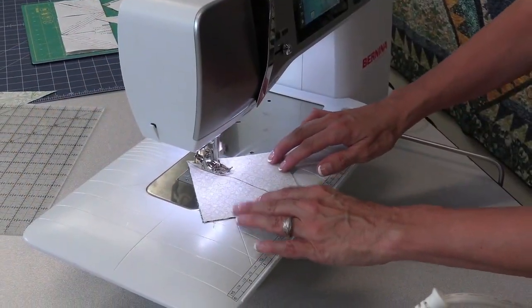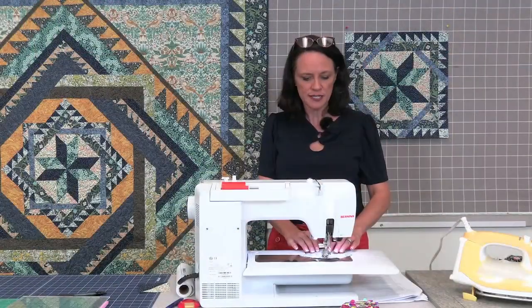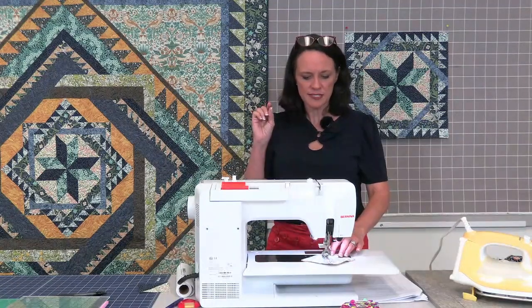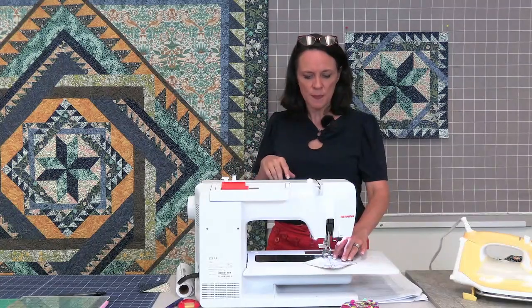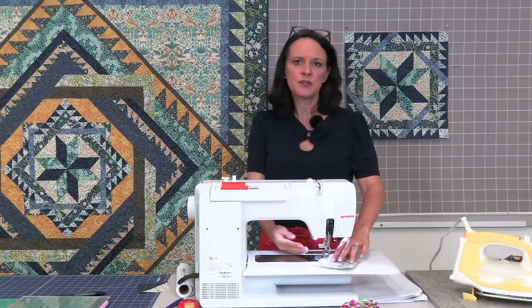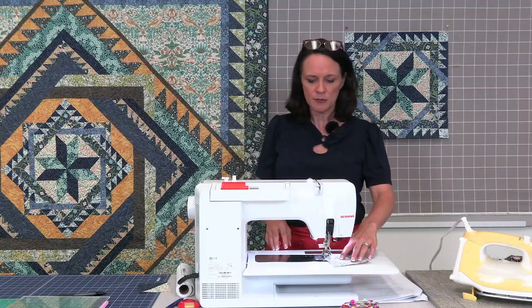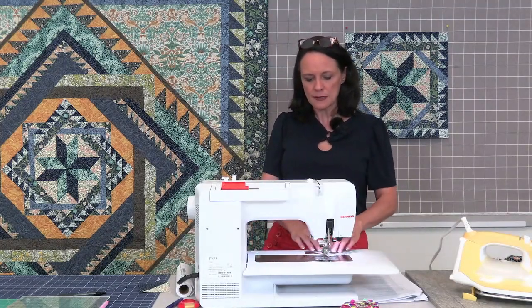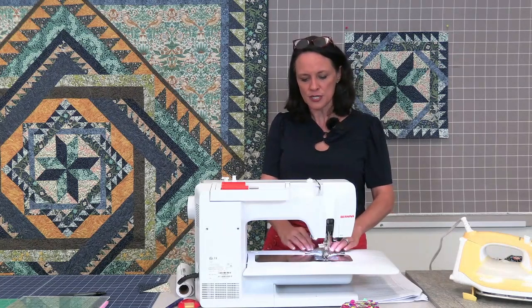And we're going to start sewing. One thing, if you're piecing, I like to piece with a little bit skinnier stitch than normal, about a 2.0. So about 2mm instead of a 2.5mm works really well.